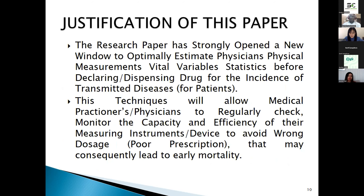Justification: the research paper has strongly opened a new window to optimally estimate the physician's physical measurement — that is, the vital variable statistics — before declaring and dispensing drugs for incidences of transmitted disease in patients. This technique will allow medical practitioners and physicians to regularly check and monitor the capacity and efficiency of the measuring instrument or device to avoid drug dosage errors from poor prescription that may consequently lead to early mortality.